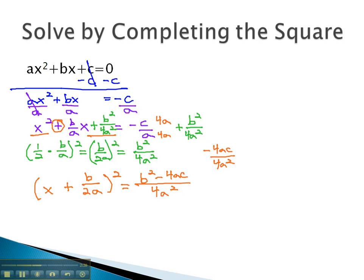We are now ready to get rid of the exponent by taking the square root of both sides. Square root and square are inverses, and we're left with x plus b over 2a equals the square root of the fraction.